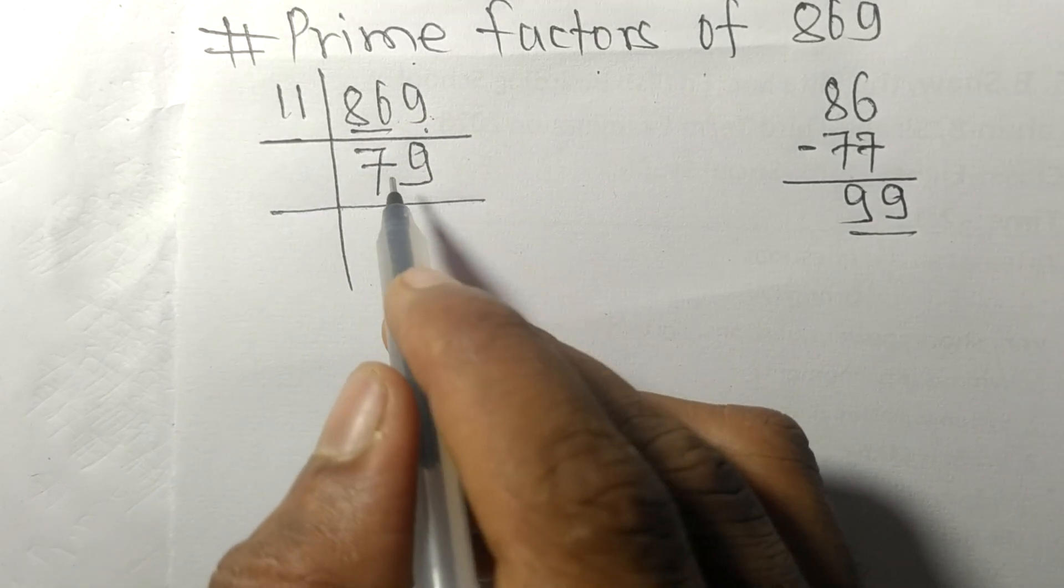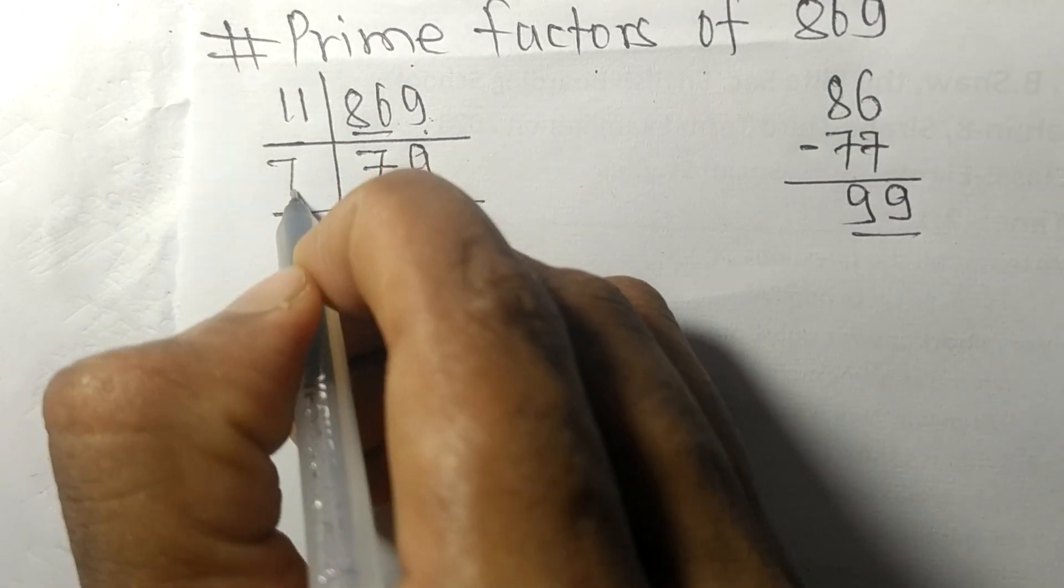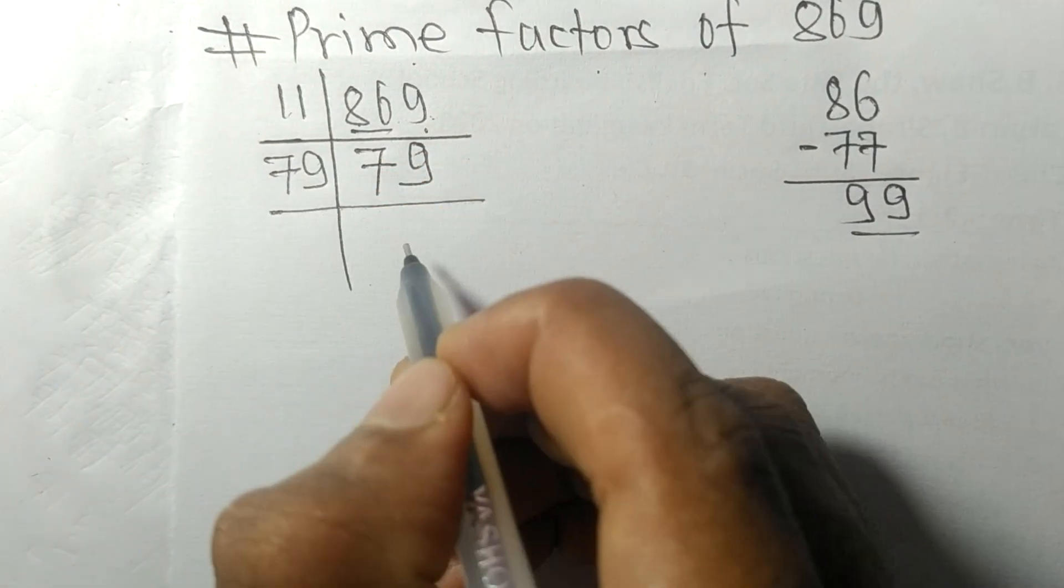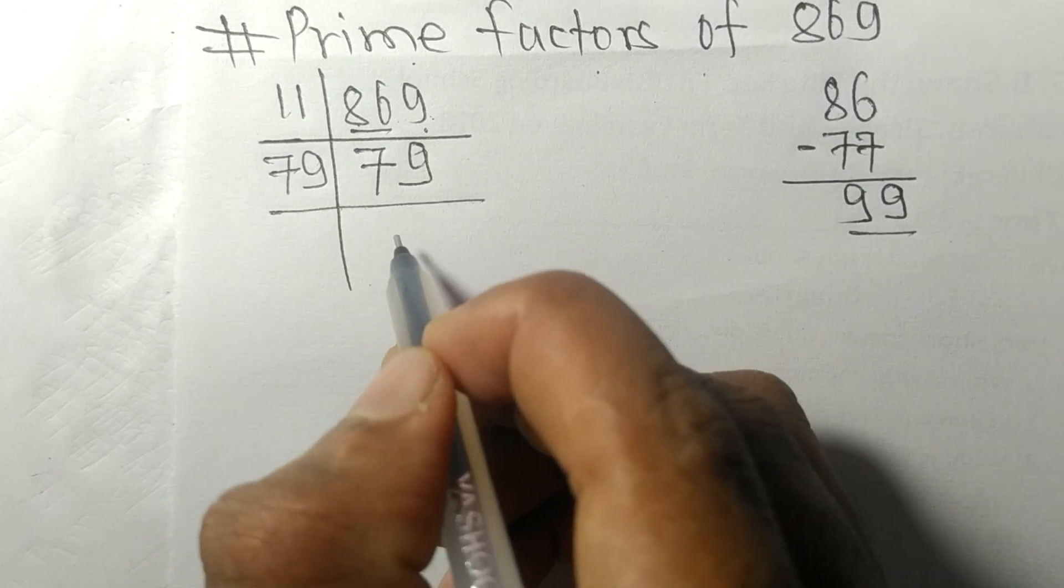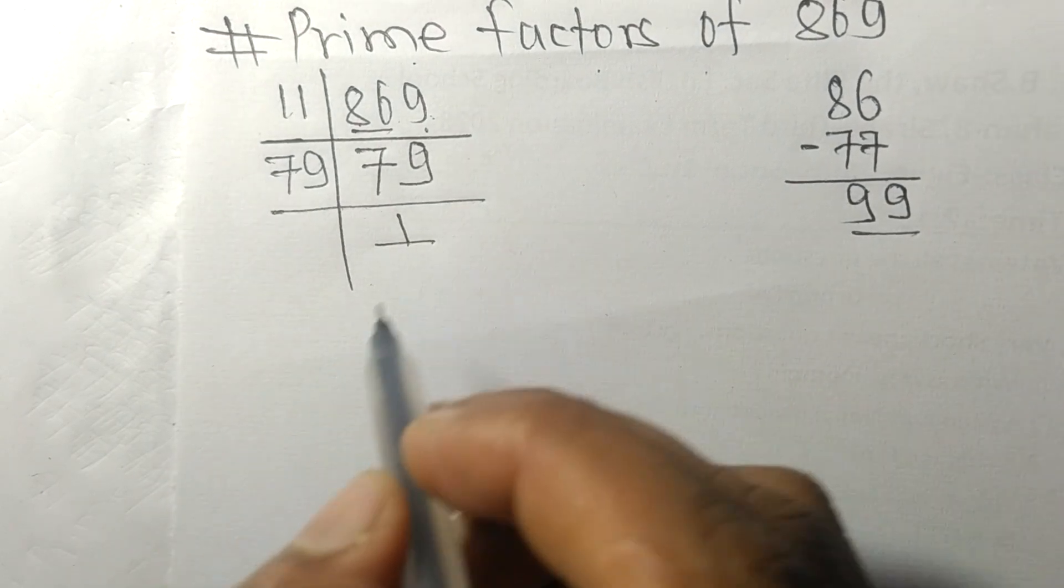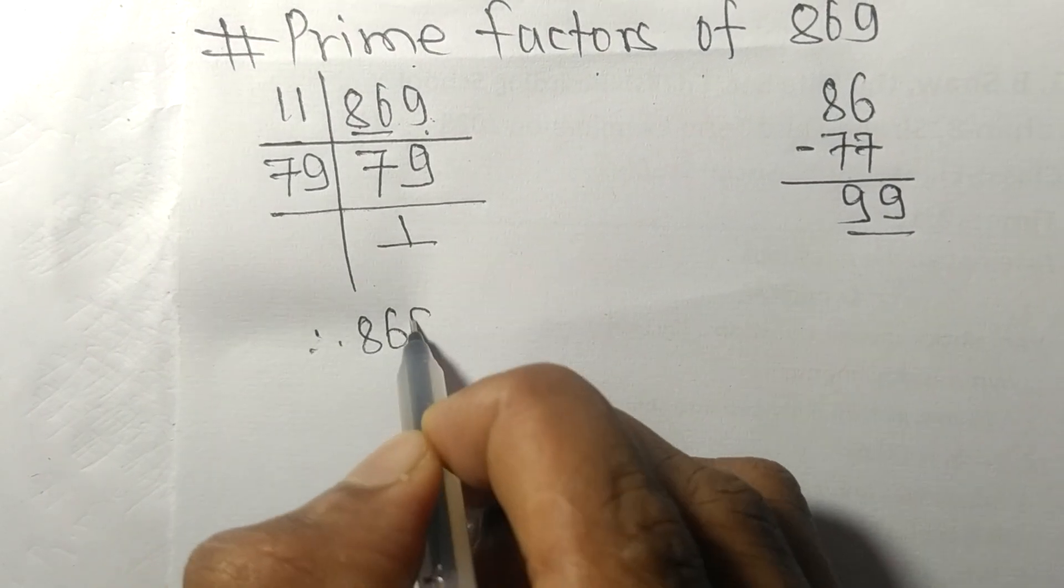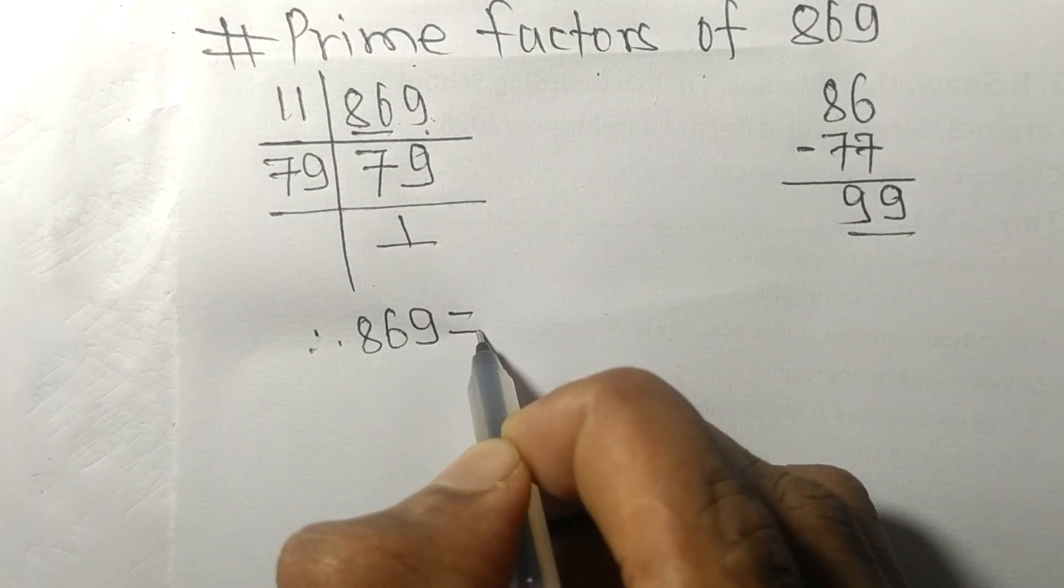prime number, so it is exactly divisible by 79 only. On dividing we get 1. Therefore 869 is equal